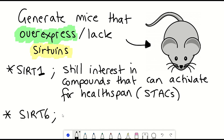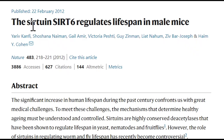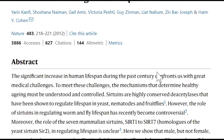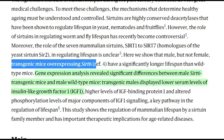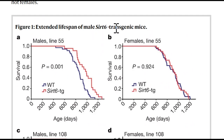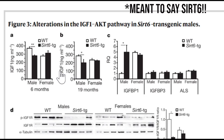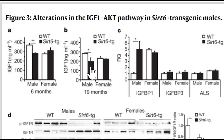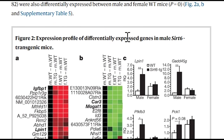But in this video we're going to talk about Sirtuin 6. So what happens if you have additional Sirtuin 6? A Nature paper that came out in 2012 showed that whole-body overexpression of Sirtuin 6 in mice was found to extend the male lifespan but not the female lifespan. In this early study, they also found that male mice with overexpression of Sirtuin 6 had reduced levels of IGF-1, which is a major growth factor responsible for stimulating growth in different cell types. Differences weren't seen in the females, and they also found a lot of differences in liver gene expression between male and female mice.